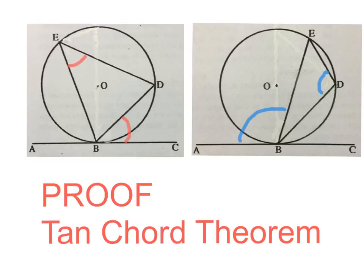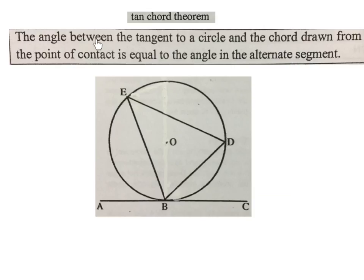Good day, in this video we're going to look at the proof of the tan chord theorem. In my system it's called theorem 7, though the theorems don't have numbers in the world. The tan chord theorem reads: the angle between the tangent to a circle and the chord drawn from the point of contact is equal to the angle in the alternate segment.